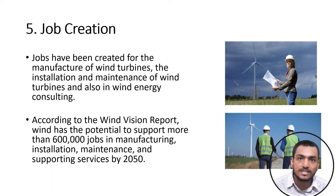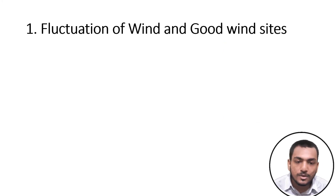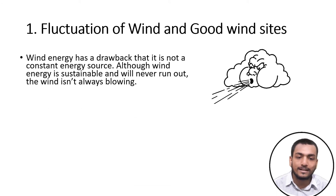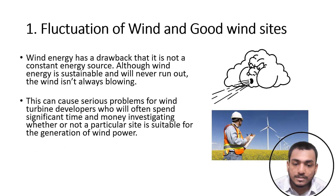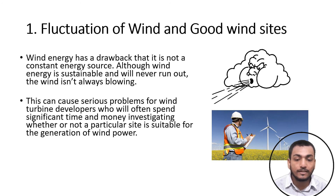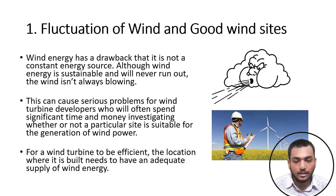Now let's see the disadvantages. Disadvantage one: fluctuation of wind and suitable wind sites. Wind energy has a drawback in that it is not a constant energy source. Although wind energy is sustainable and will never run out, the wind isn't always blowing. This can cause serious problems for wind turbine developers, who often spend significant time and money investigating whether a particular site is suitable for wind power generation. For a wind turbine to be efficient, the location where it is built needs to have an adequate supply of wind energy.